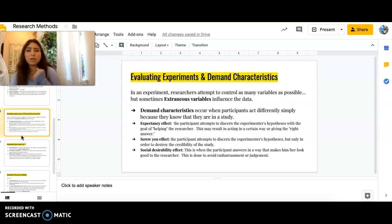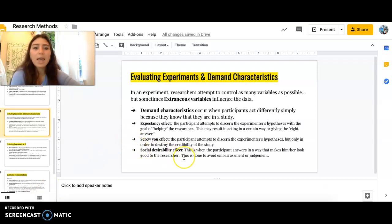Evaluating experiments and demand characteristics. So, in an experiment, researchers attempt to control as many variables as possible, but sometimes extraneous variables influence the data. We already talked about that. But demand characteristics occur when participants act differently simply because they know they're in the study. So, if I was in a study and I kind of figured it out that they were looking for, for an example, in the Zimbardo prison experiment, they're asking me, like, oh, you're gonna be the guard. Well, then, if I know that they're testing whether or not I'm being violent towards these prisoners, then, like, you know what, I might want to, I might do the social desirability effect, and I'm going to try to make myself look good to the researcher rather than look like this evil tormentor and stuff like that. So, that's an example of both those two.